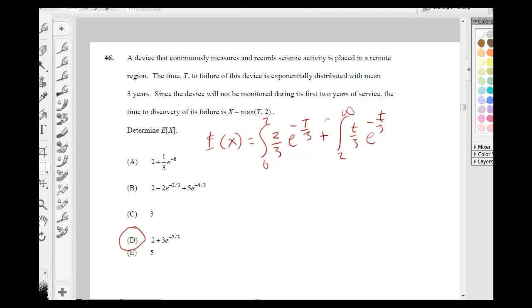This is problem number 46. A device that continuously measures and records seismic activities placed in a remote region. The time t to failure of this device is exponentially distributed with mean of 3 years. Since the device will not be monitored during its first two years of service, the time to discovery of its failure is x equals the maximum of t and 2. Determine E(x).